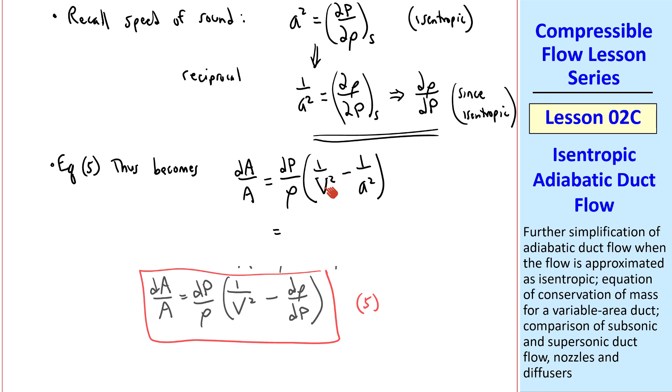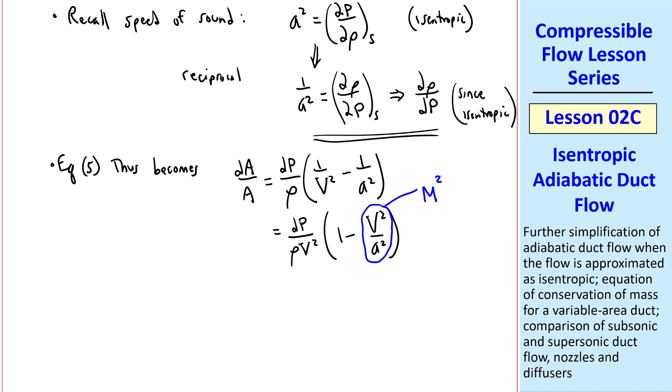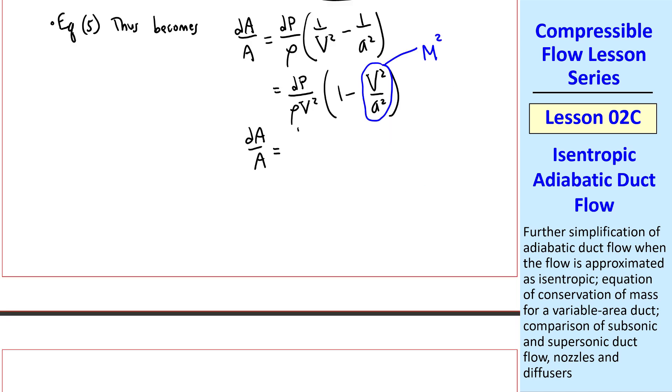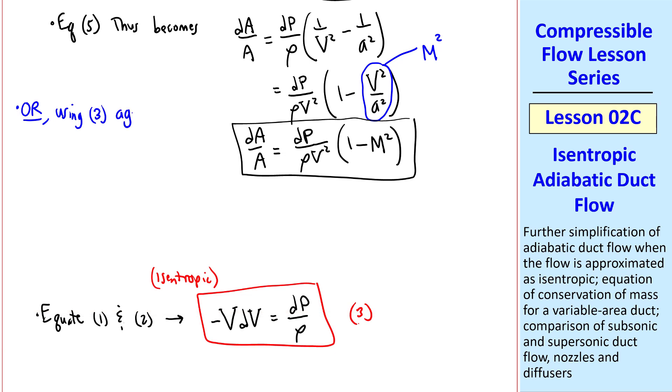And putting this V squared outside the parentheses, we get dP over rho V squared times 1 minus V squared over A squared. And everyone should recognize this as Mach number squared. So dA over A is dP over rho V squared times 1 minus M squared.